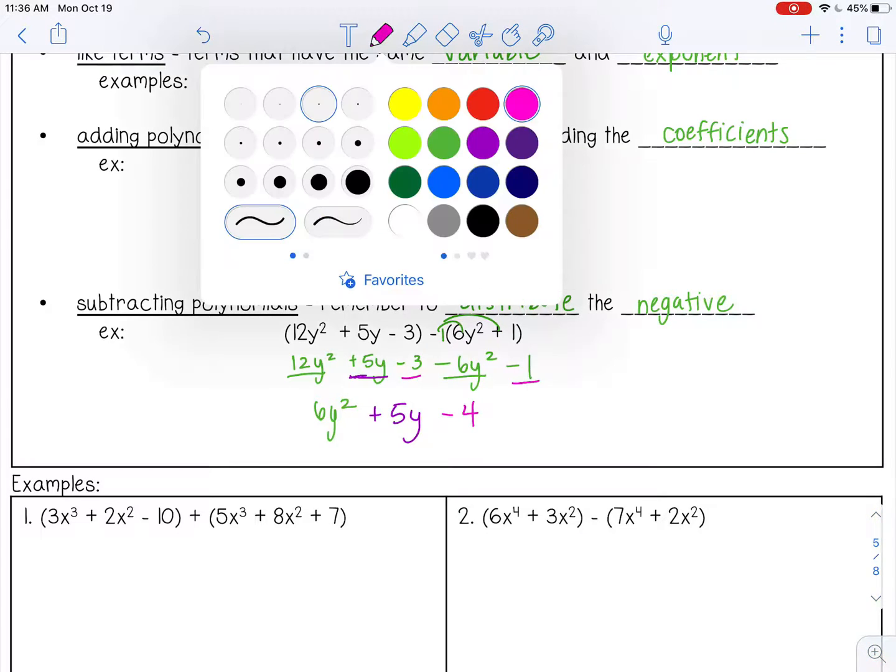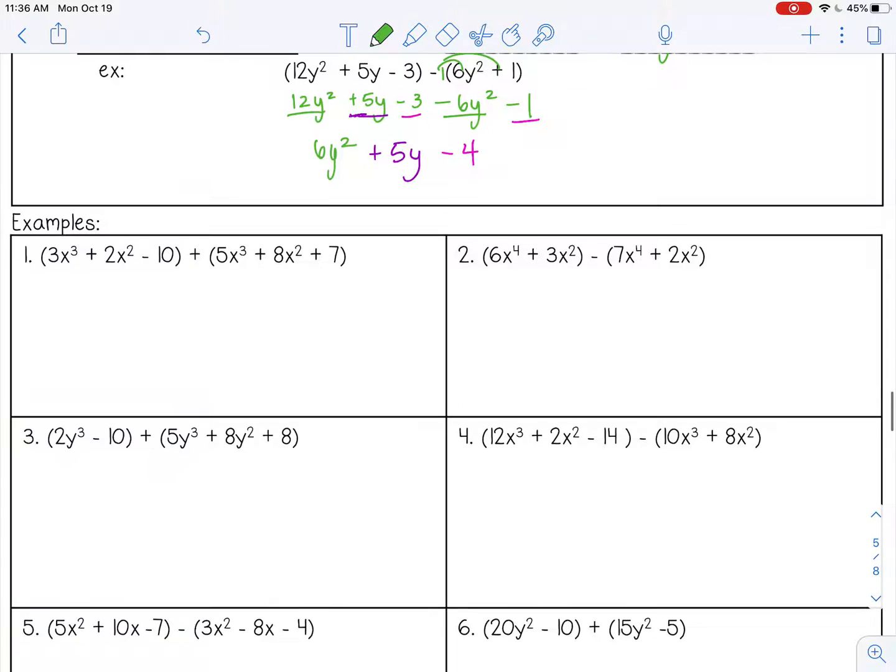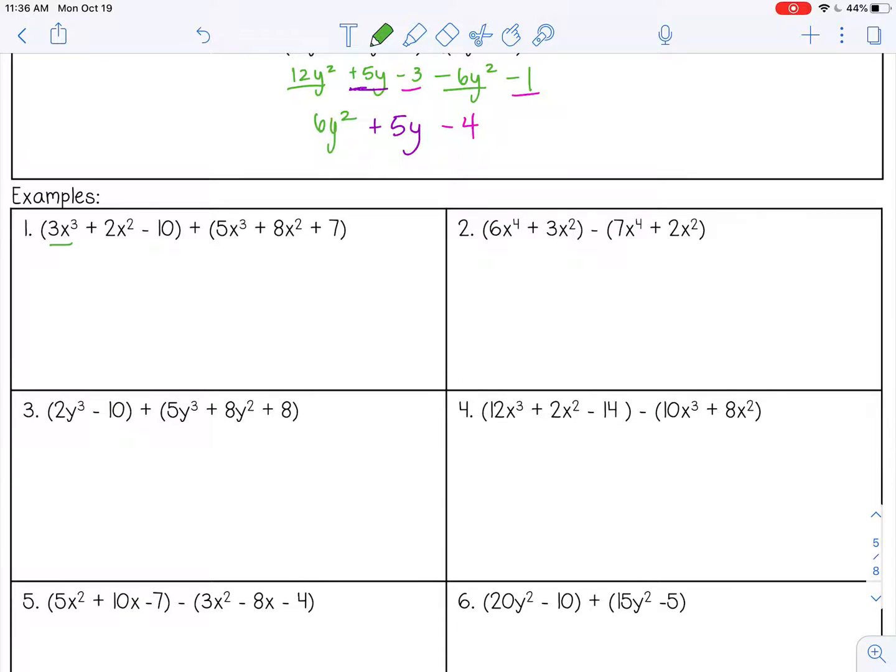Let's try some more examples. So number one, I am adding. So I have like terms here. 3x cubed plus 5x cubed. That's 8x cubed.